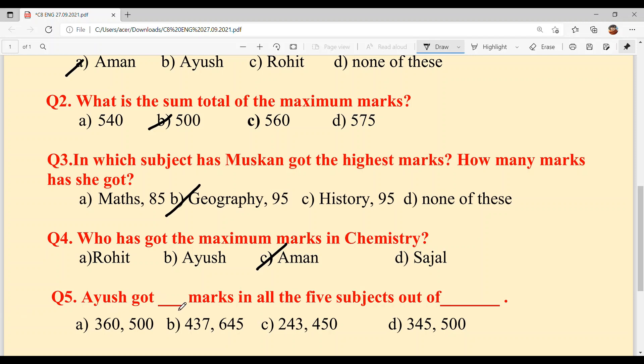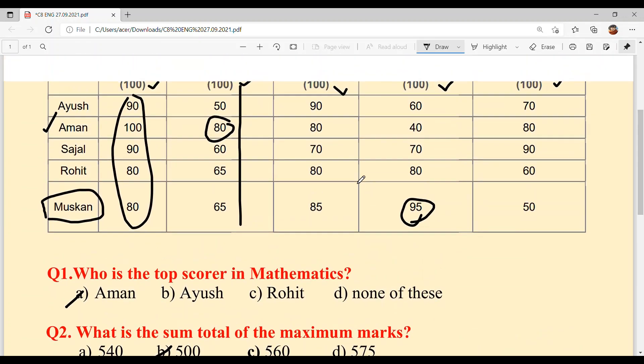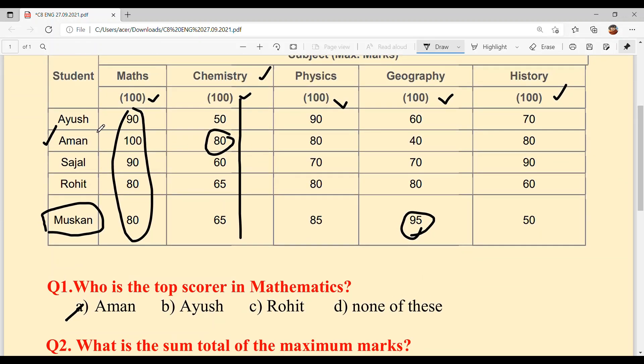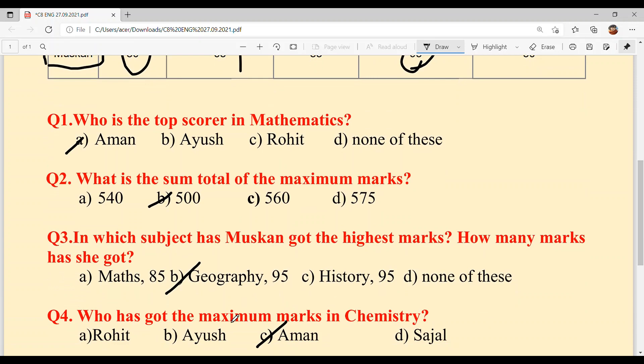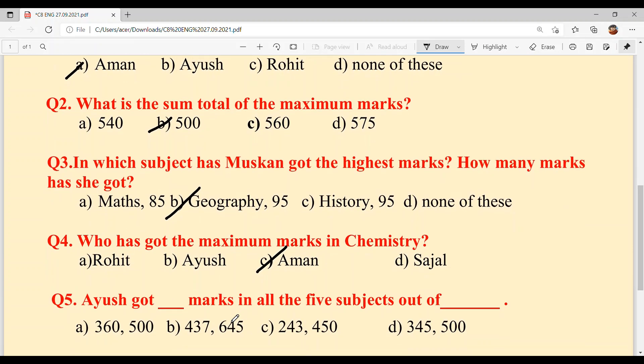Last question: Ayush got how many marks in all five subjects out of how many total marks? Simple - we'll add up Ayush's column: 90 plus 50 plus 90 plus 60 plus 70 equals 360. Total marks we already know is 500. So it's 360 out of 500, Option A.